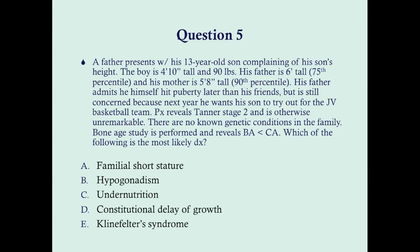Question five: a father presents with his 13-year-old son complaining about his son's height. The boy is 4 feet 10 inches tall and 90 pounds. His father is 6 feet tall — 75th percentile for men — and his mother is 5 feet 8 inches tall — 90th percentile for women. His father admits he himself hit puberty later than his friends. Physical exam reveals Tanner stage 2 and is otherwise unremarkable. Bone age study reveals a bone age less than the chronologic age. Which of the following is the most likely diagnosis? A) familial short stature, B) hypogonadism, C) undernutrition, D) constitutional delay of growth, or E) Klinefelter syndrome.